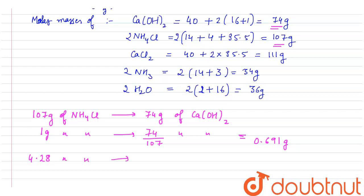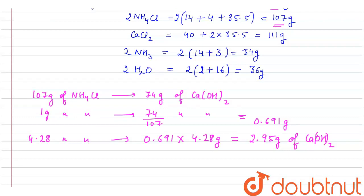Now we'll multiply this value, that is 0.691, into 4.28 grams of calcium hydroxide, which after multiplication comes out to be 2.95 grams of calcium hydroxide. So the mass of calcium hydroxide is 2.95 grams to decompose 4.28 grams of NH4Cl, that is ammonium chloride. So the answer is 2.95 grams.